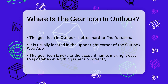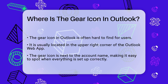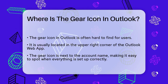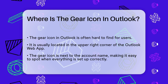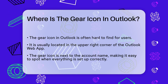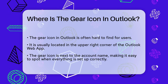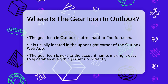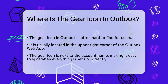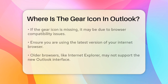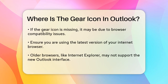First, let's talk about where the gear icon is typically located. When you're using the Outlook web app, the gear icon should be right at the upper right corner of your screen, right beside your account name, so it's hard to miss if everything is set up correctly.